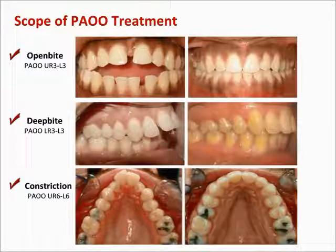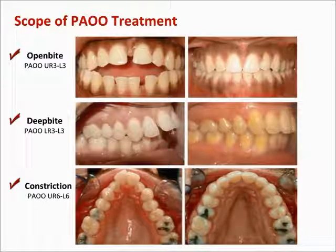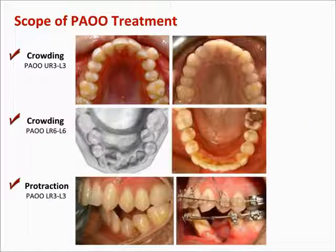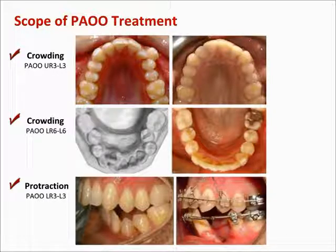Excellent orthodontic care is based upon excellent diagnosis and treatment planning. With good treatment planning judgment, PAOO can be used to close 10mm anterior open bites, 100% anterior deep bites, and severe arch-width constrictions that exceed Proffit's envelope of discrepancy. PAOO can also be used to resolve 10-12mm of dental arch crowding in either maxillary or mandibular arches, or excess overjet requiring incisor proclination.